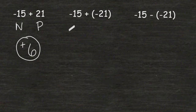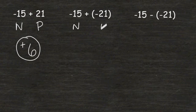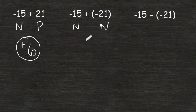In this example, we have negative 15 plus negative 21. Because both of those integers share the same sign, we have to find the sum of their absolute values. 15 plus 21 is 36.